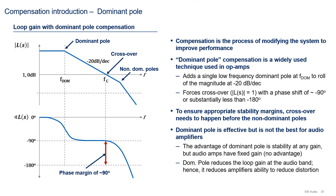Now that we have an understanding about stability and margins, we can discuss compensation. Compensation is the process of modifying the system to improve performance. Let's look at an example, dominant pole compensation.